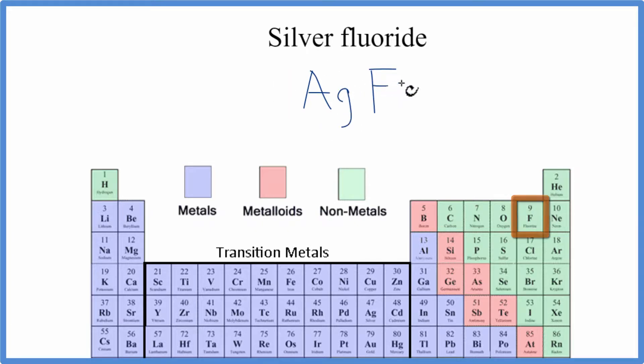Silver's a metal, and fluorine, that's a non-metal. When we have a metal and a non-metal, we have an ionic compound.